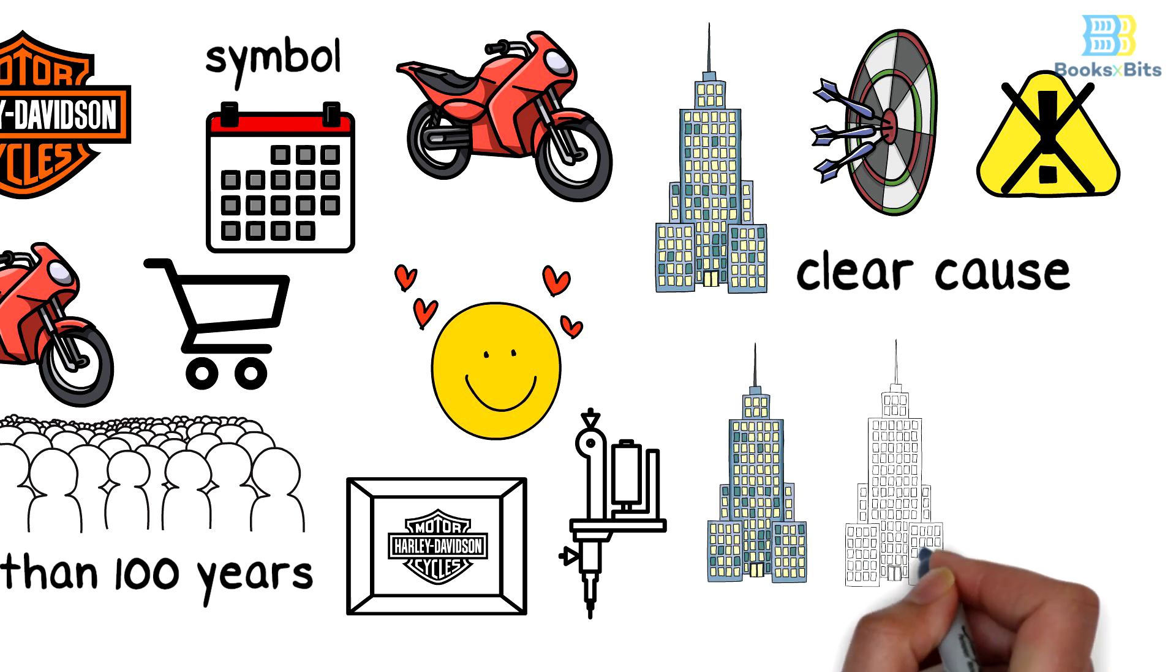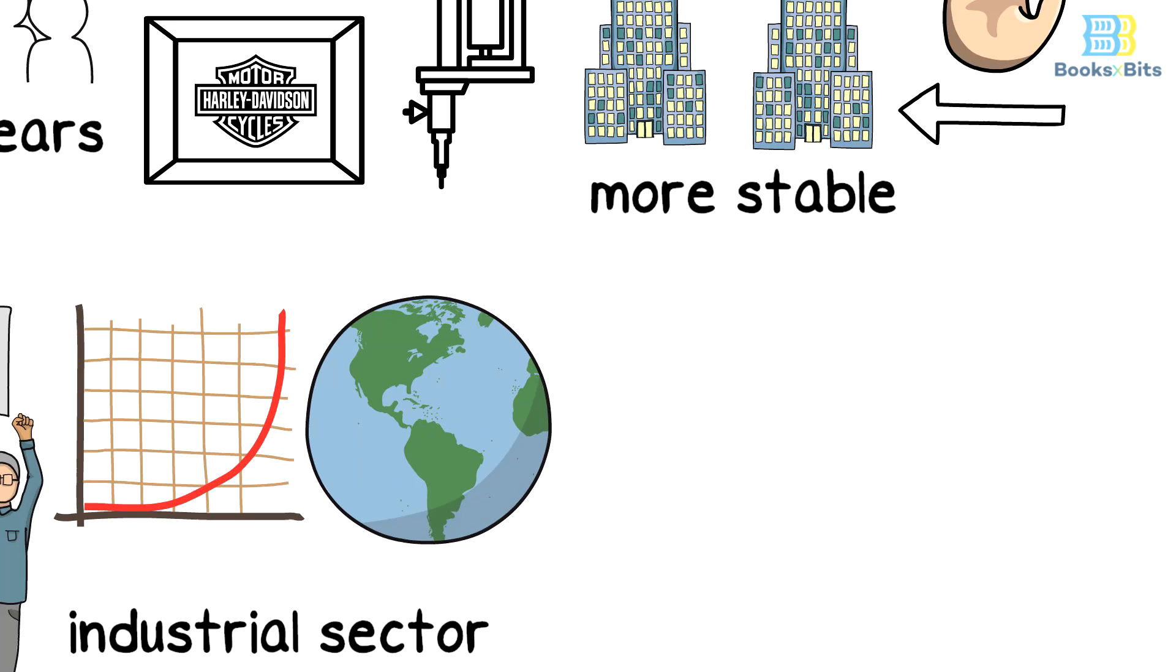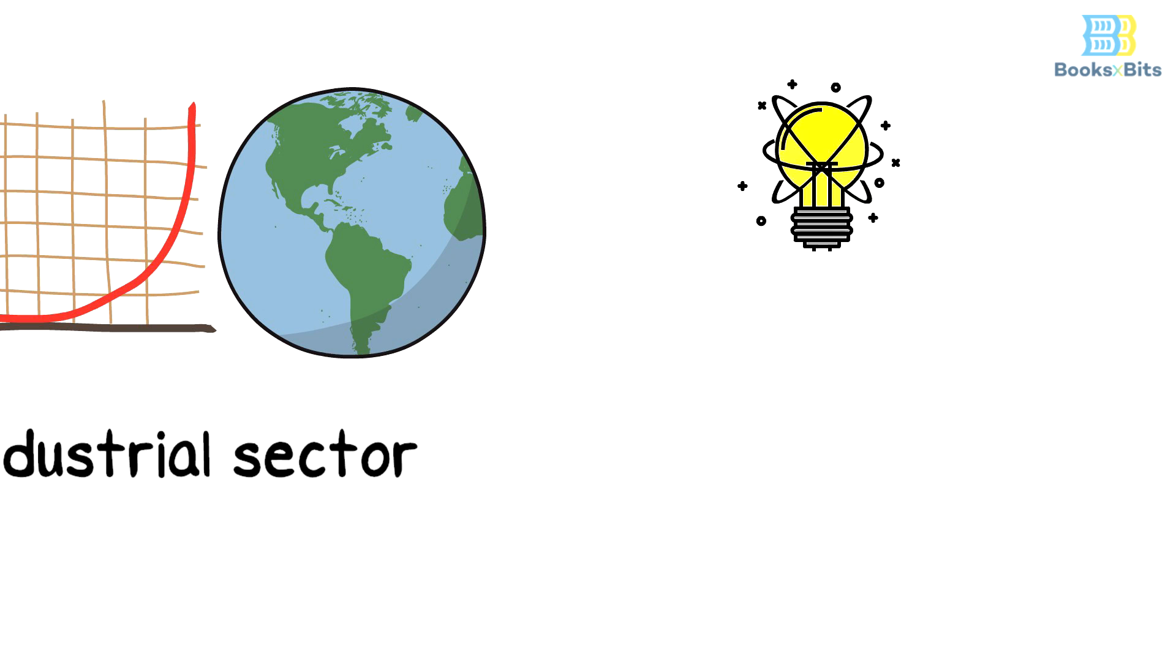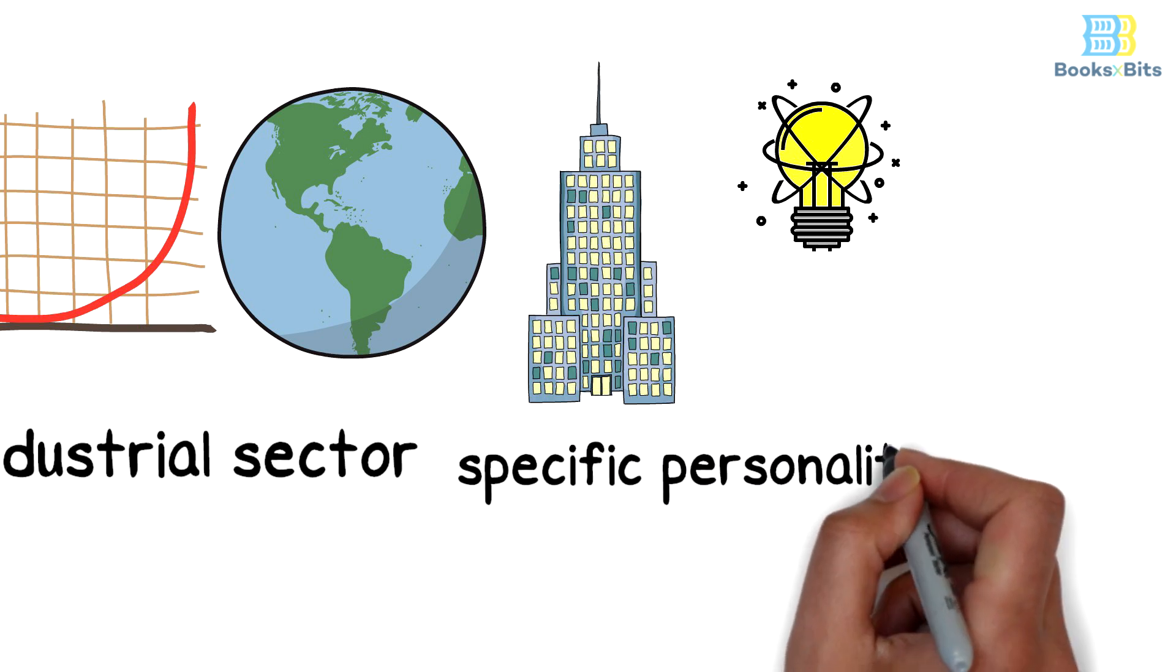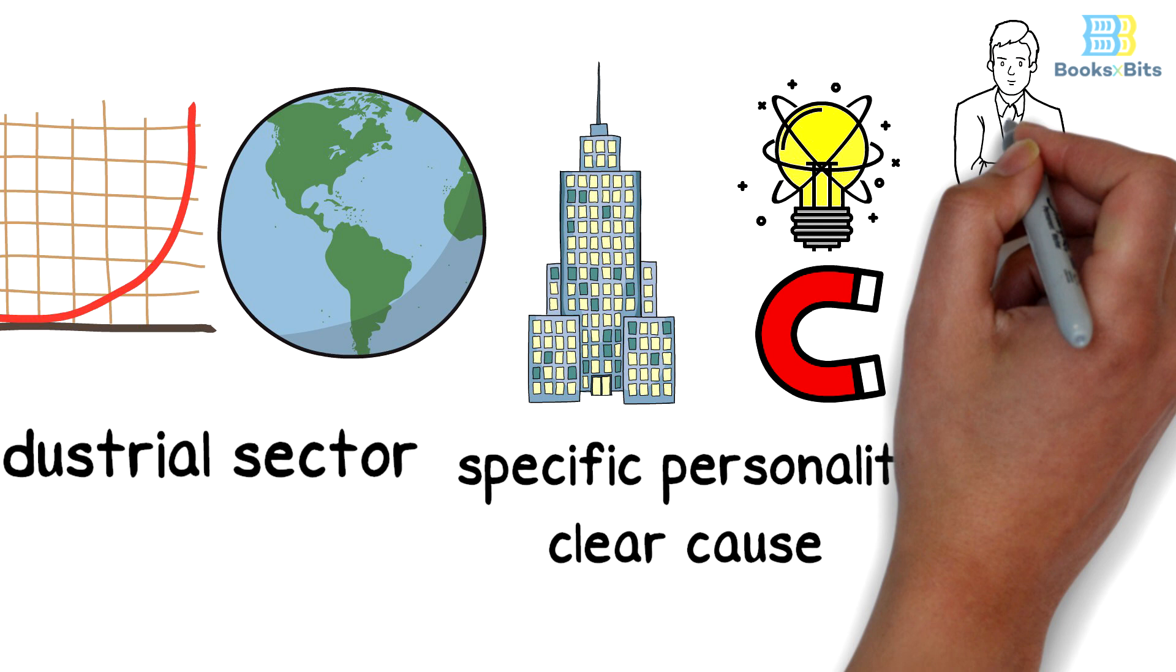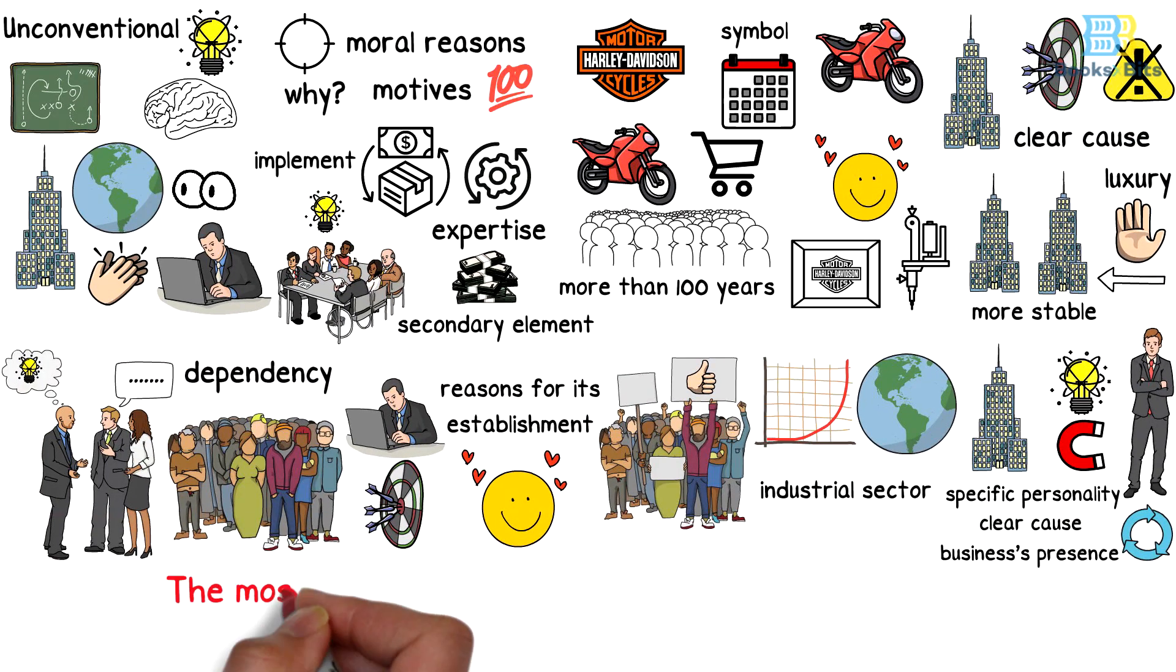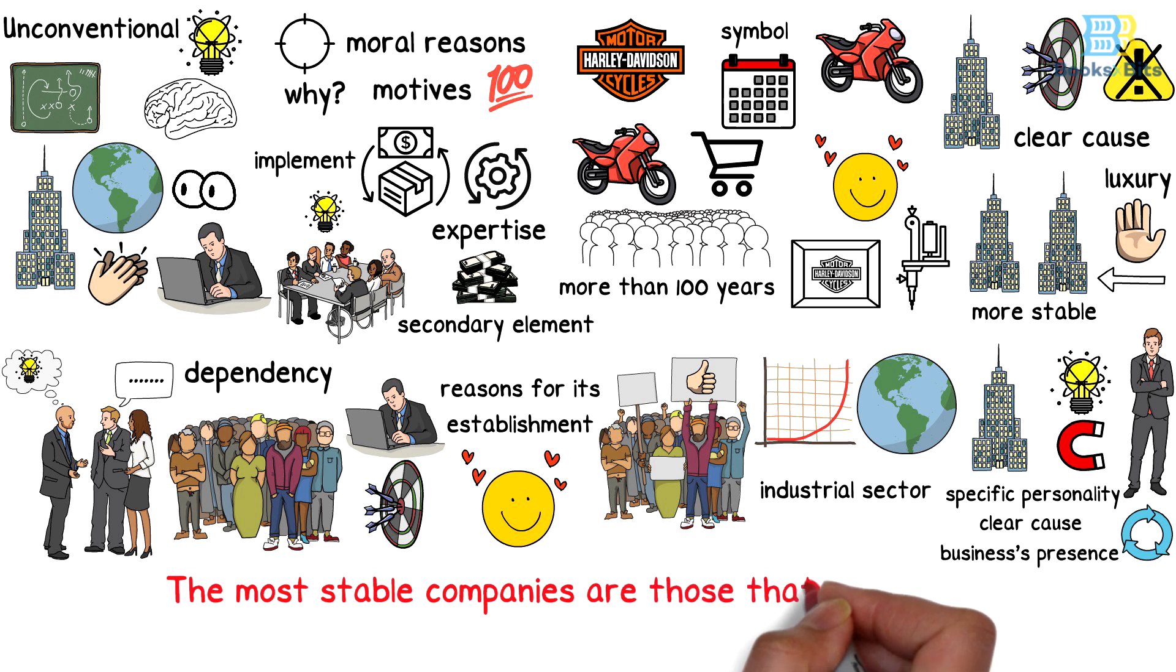This gives them the luxury of largely ignoring their competitors. As a result they can be more stable and creative than others and don't need to copy others. Additionally, when companies have a specific personality and a clear cause, they are also able to attract the best employees, which is invaluable when it comes to enhancing the business's presence and sustainability. The most stable companies are those that focus on creating a clear and effective Why circle.